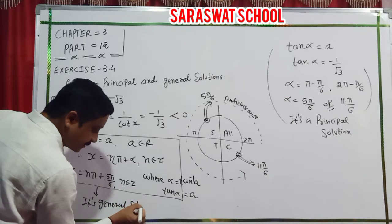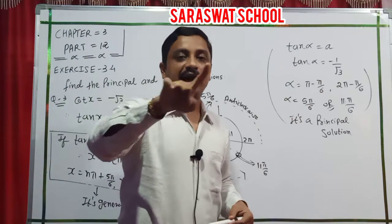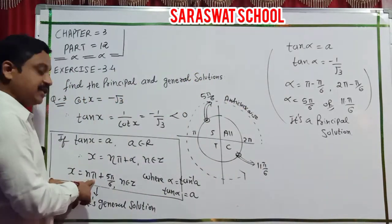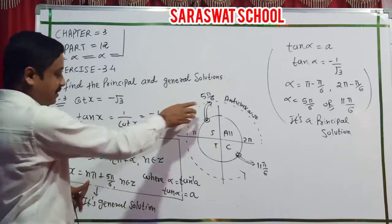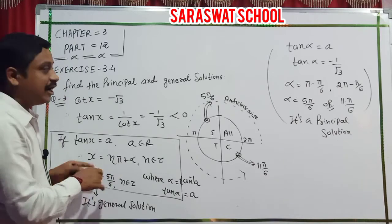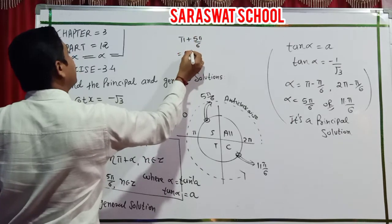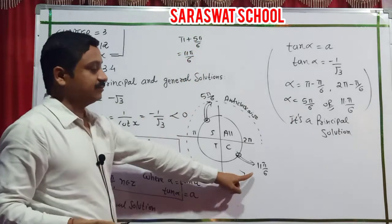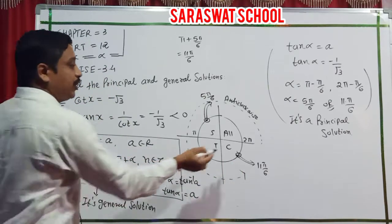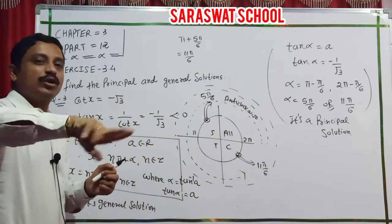The general solution means if you rotate anticlockwise many rotations: when n equals 0, the answer is 5 pi by 6; when n equals 1, it is pi plus 5 pi by 6, which gives 11 pi by 6. For n equals 2: 2 pi plus 5 pi by 6 enters new rotations. Clockwise rotation is also valid with negative n values.